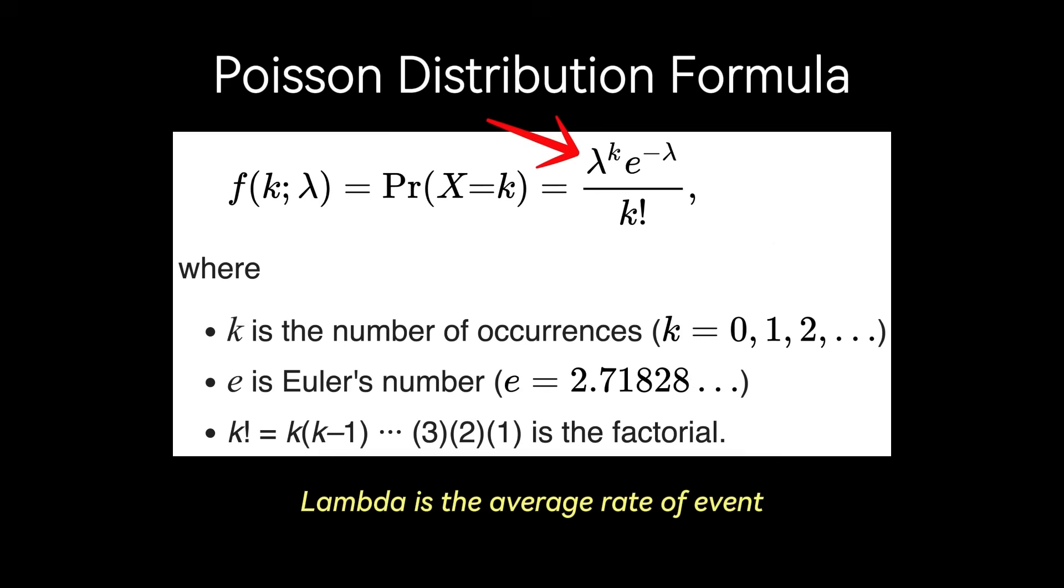Lambda is the average rate of event occurrences within the given interval. It's the core of the distribution and the only parameter. For example, if a call center receives an average of 10 calls per hour, then lambda equals 10 for that one hour interval. E is Euler's number, which is a fundamental mathematical constant approximately equal to 2.71828. It appears naturally in processes involving continuous growth or decay. And k factorial is the product of all positive integers up to k. For example, 5 factorial is 5 times 4 times 3 times 2 times 1, or 120. And for k equals 0, 0 factorial is defined as 1.